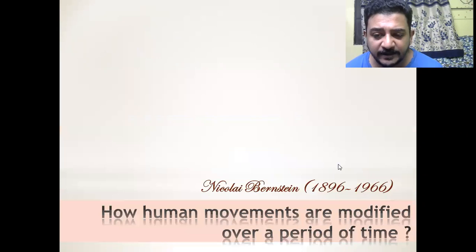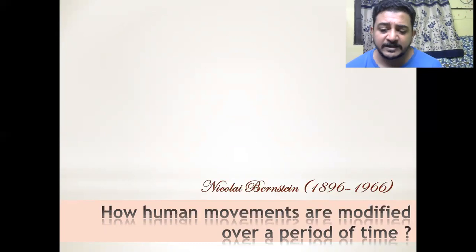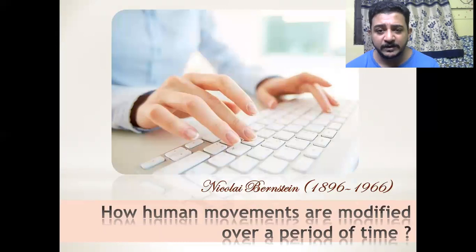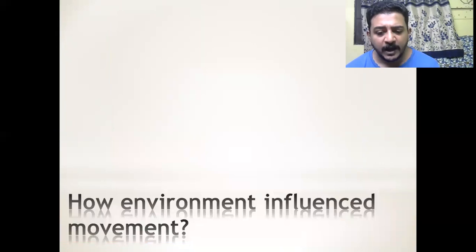When it comes to systems theory, they said it is not only the nervous system that is concerned with movement production. This guy Bernstein raised a lot of questions which were unanswered by previous theories. He asked how human movements are modified over a period of time — for example, when you start typing on a typewriter, initially you are very slow, but once you keep practicing, your speed increases and the way you do it also differs.